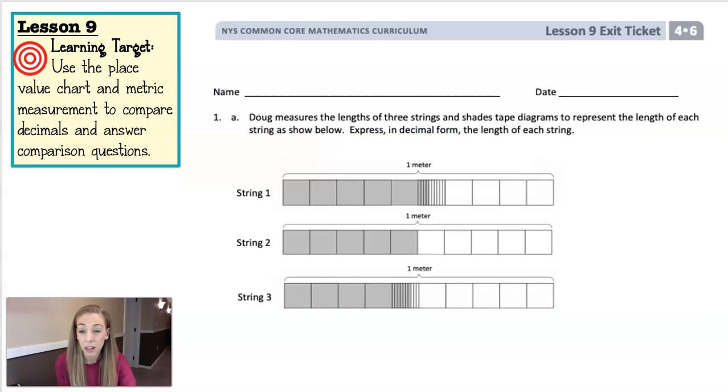Lesson 9 says use the place value chart and metric measurement to compare decimals and answer comparison questions. It says Doug measures the lengths of three strings and shades tape diagrams to represent the length of each string as shown below. Isn't that what we would all do with string? Right? Make a tape diagram. Express in decimal form the length of each string.